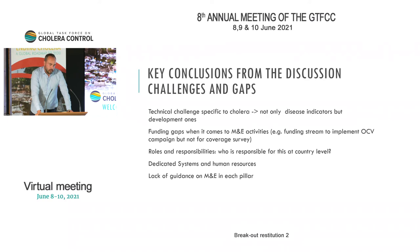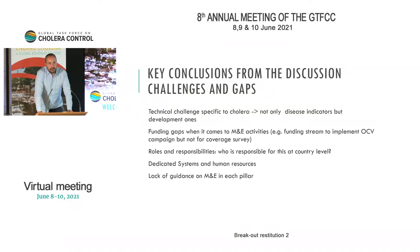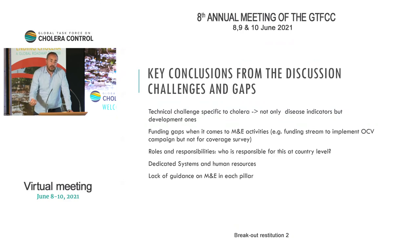Dedicated systems for epidemiological surveillance are somewhat standardized, although we know the limitations in certain countries affected by cholera. The other systems for monitoring WASH and other aspects are even more neglected by NCPs. So we need dedicated systems. There is also a lack of guidance — the GTFCC has provided a framework with 16 core indicators, but there is clearly a need for guidance on how these 16 indicators should be monitored specifically.